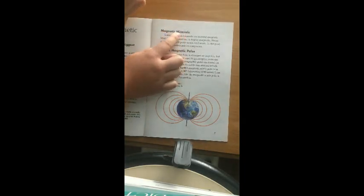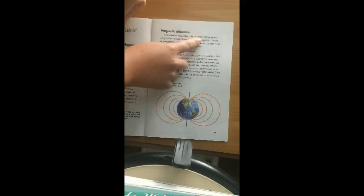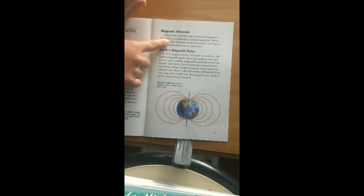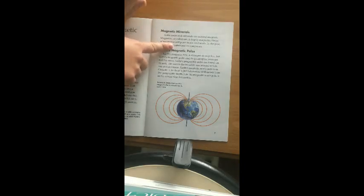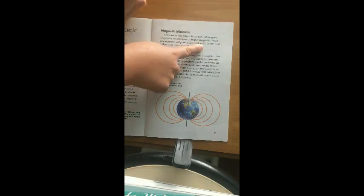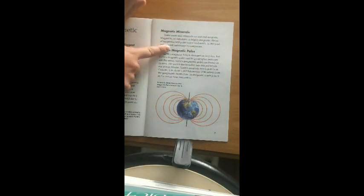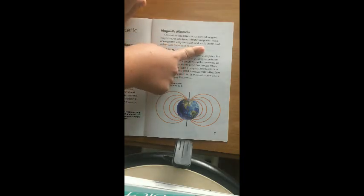Magnetic minerals. Some rocks and minerals are natural magnets. Magnetite, or lodestone, is highly magnetic. Pieces of magnetite will point north and south. In the past, sailors used lodestones as compasses.